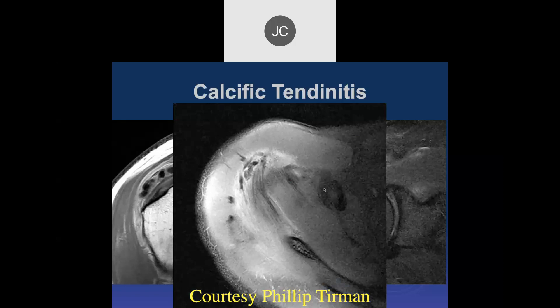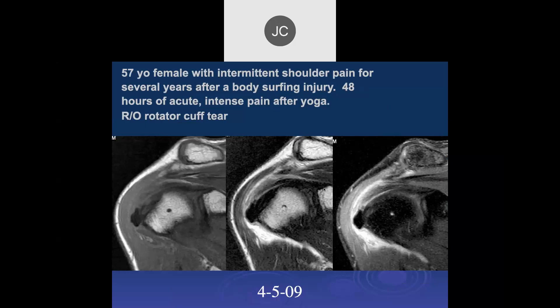I wonder why this patient waited. This is obviously a chronic problem — the patient didn't get treated for a long time. Probably the pain was gone. History: 57-year-old female with intermittent shoulder pain for several years after a body surfing injury, then 48 hours of acute intense pain after yoga. Rule out rotator cuff tear.